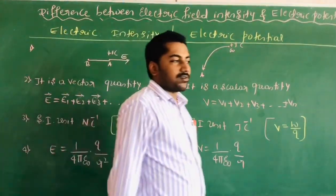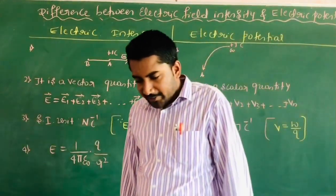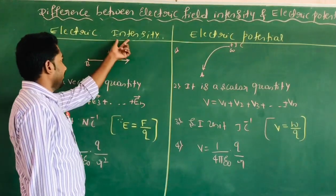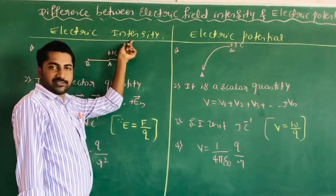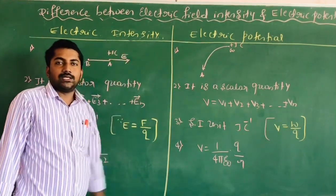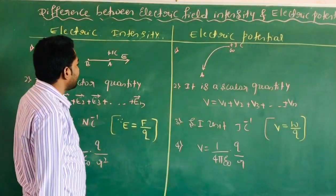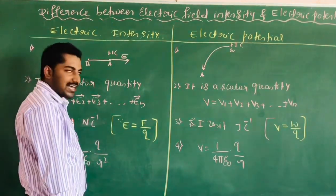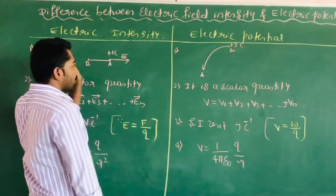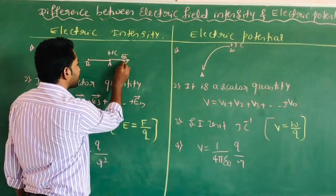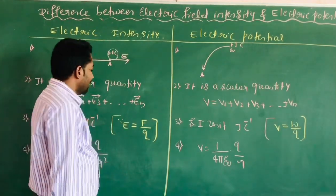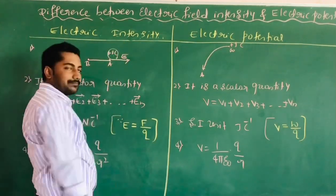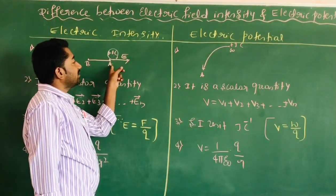The next concept is the difference between electric field intensity and electric potential. Electric intensity at that point is defined as the force experienced by the unit positive charge. The force experienced by one coulomb of unit positive charge at that point is called electric intensity.